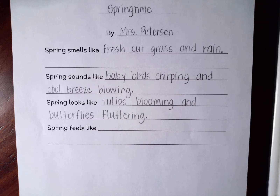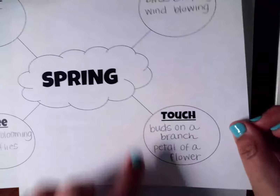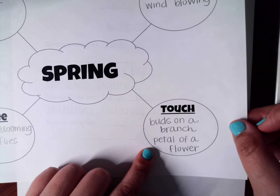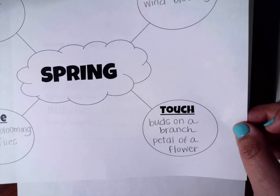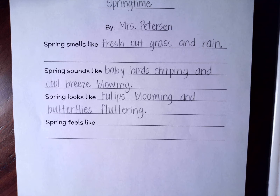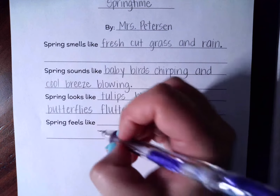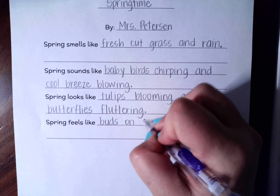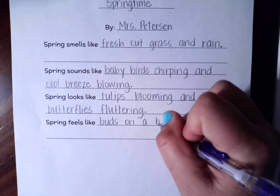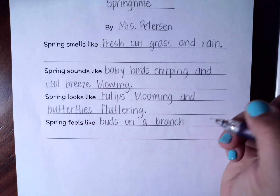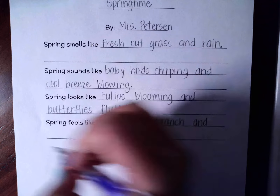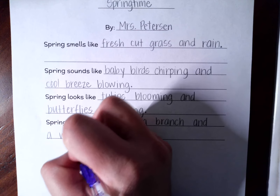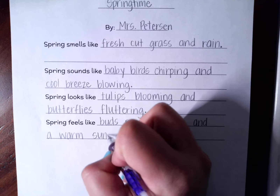The last one is what spring feels like. I have two that are pretty similar — I put buds on a branch and petal of a flower. But I think spring is also a warm sunny day, so I want to change one of those. I'm going to keep 'buds on a branch,' because in springtime there are lots of new buds getting ready to bloom, and the feeling of touching a new bud is interesting. And then: a warm sunny day.